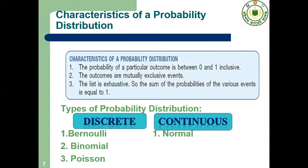There are some characteristics of a probability distribution. Number one: the probability lies between 0 and 1. Number two: the outcomes are mutually exclusive. And lastly, the sum of the probabilities is equal to 1.